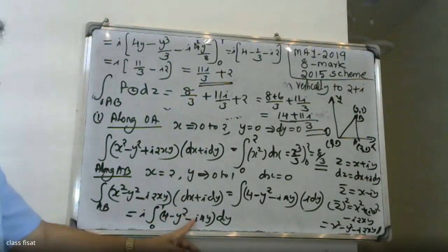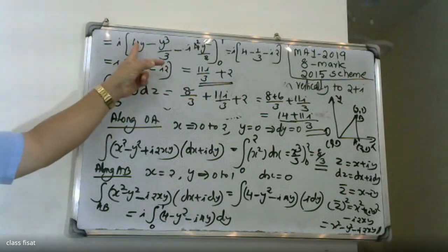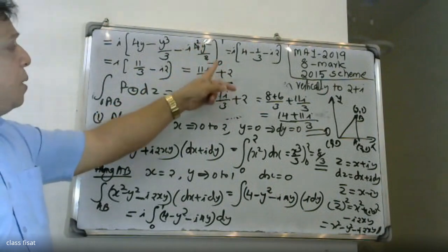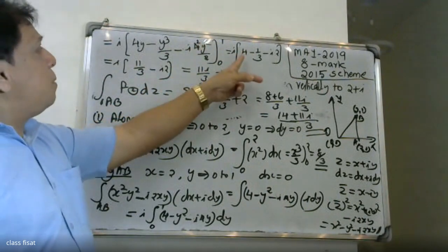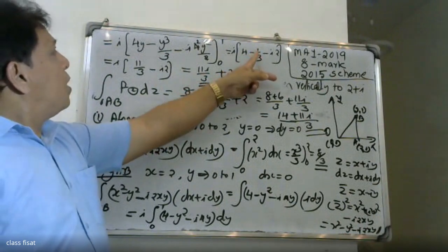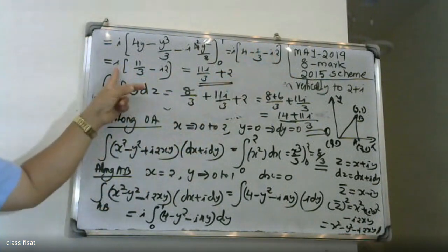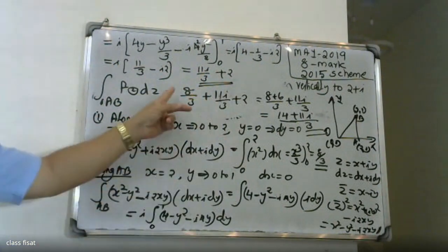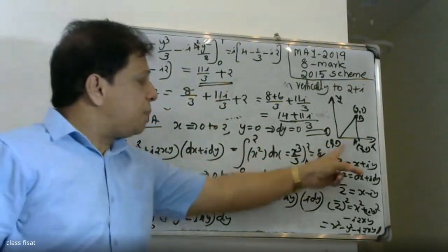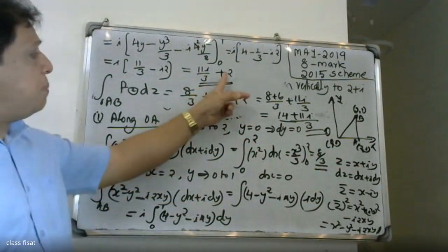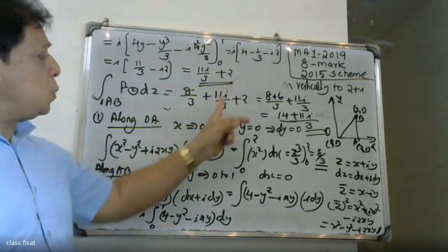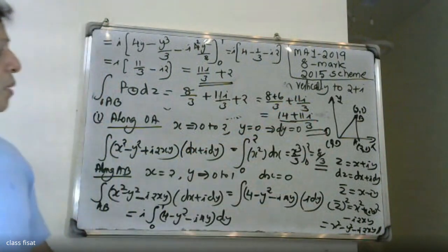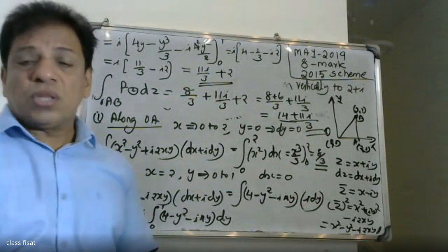Integrating 4 minus y² minus i times 4y over dy, we get 4y minus y³ divided by 3, minus i times 4y² divided by 2. Evaluating from 0 to 1: i times 4 minus 1/3, minus i times 2. That gives i times 11/3 minus i times 2, which is 8/3.